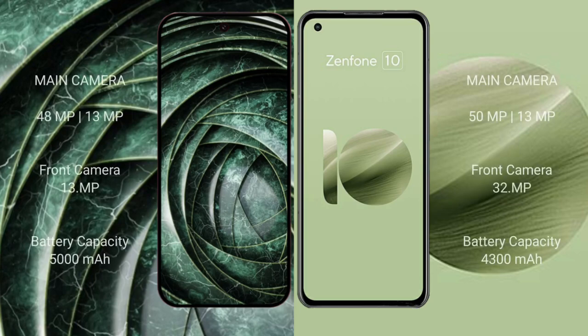Google Pixel 9a has a rear dual camera setup: 489 pixels and 139 pixels, with a 139 pixels front camera. Asus Zenfone 10 also has a rear dual camera setup: 159 pixels and 139 pixels, with a 329 pixels front camera.